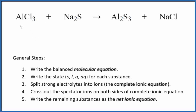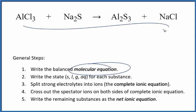Let's balance the net ionic equation for AlCl3 plus Na2S. This is aluminum chloride and we have sodium sulfide. So the first thing that we do with our net ionic equations, we need to balance the molecular equation. This is the molecular equation.